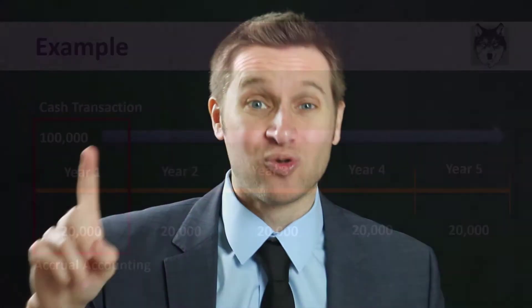The second point is that depreciation is a non-cash transaction. This is very important to understand because we are usually talking about very large amounts of money that are being recorded as an expense, but no money is being exchanged between parties. This expense only exists in what accountants are writing down in their books. This is the big difference between cash accounting and accrual accounting.